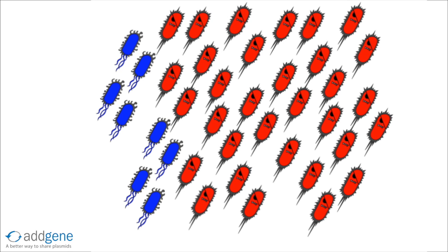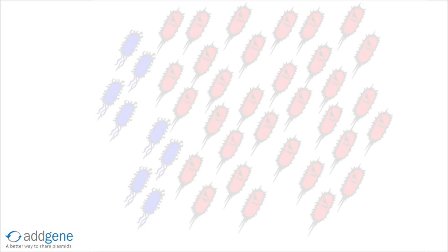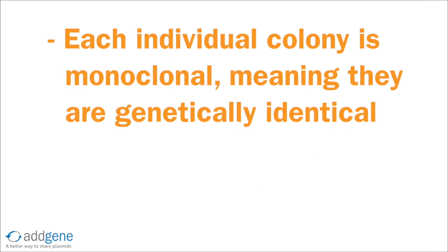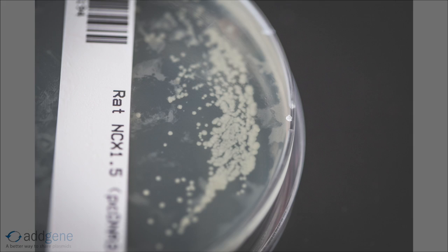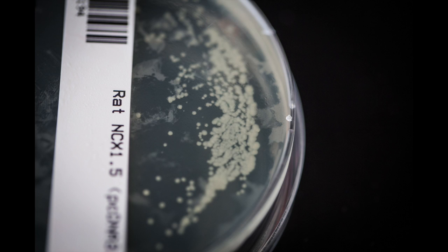We solve this problem by streaking for single colonies. In this case, each individual colony is monoclonal and the vast majority of colonies will be wild type. Starting liquid cultures from these colonies will generally lead to expected plasmid yields and more consistent results in later experiments.